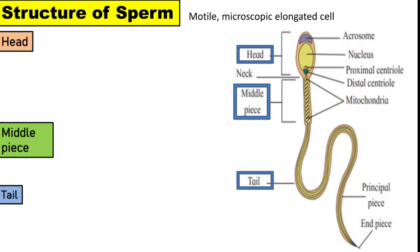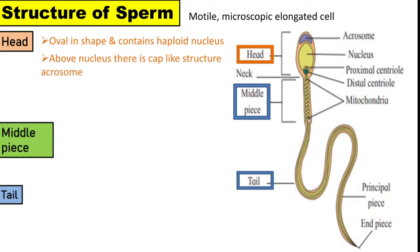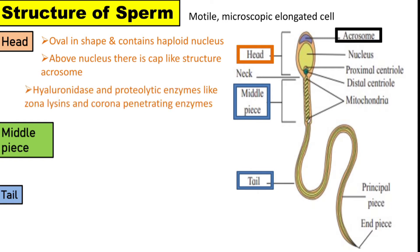Head. The sperm head is oval in shape and contains a haploid nucleus. Above the nucleus there is a cap-like structure called the acrosome. It is formed from the Golgi body. The acrosome contains hydrolytic enzymes — hyaluronidase and proteolytic enzymes like zonalisins and corona penetrating enzymes.